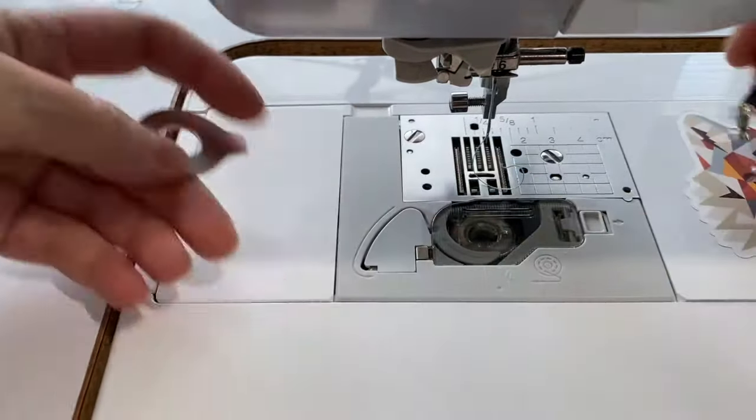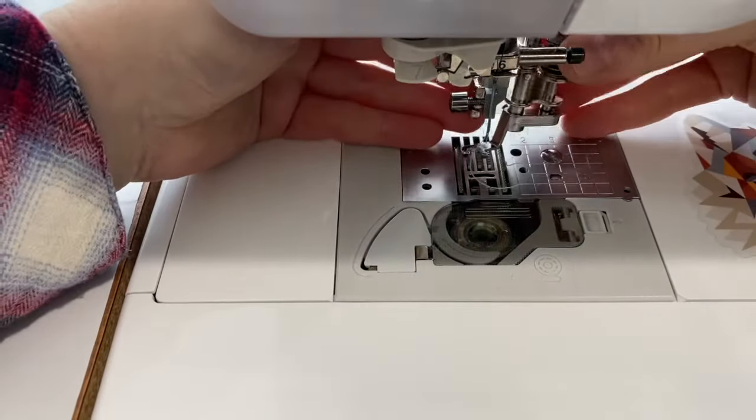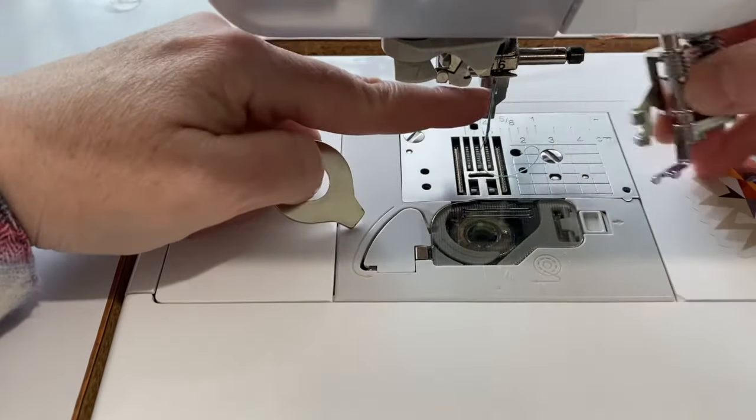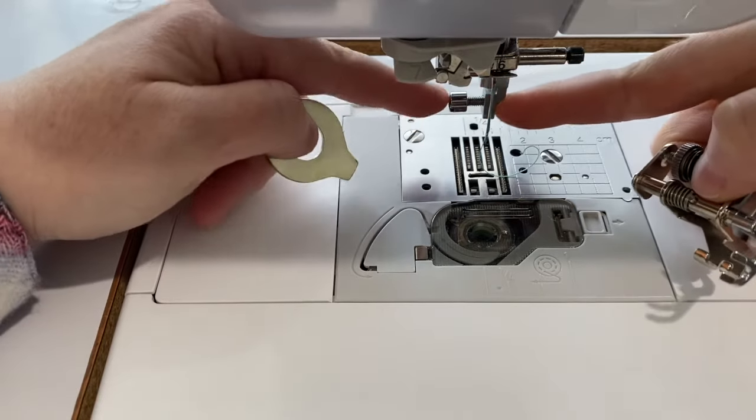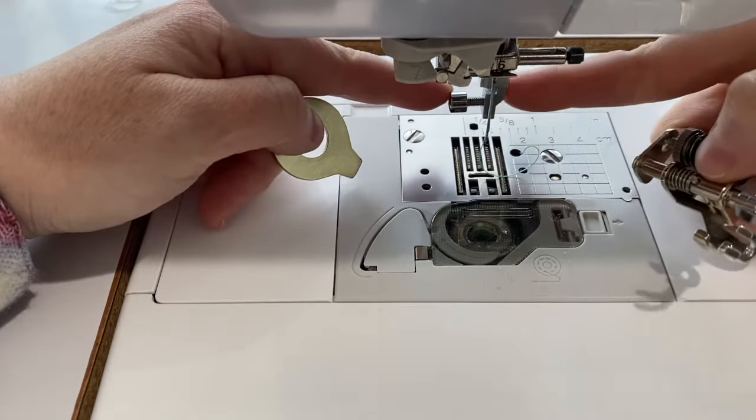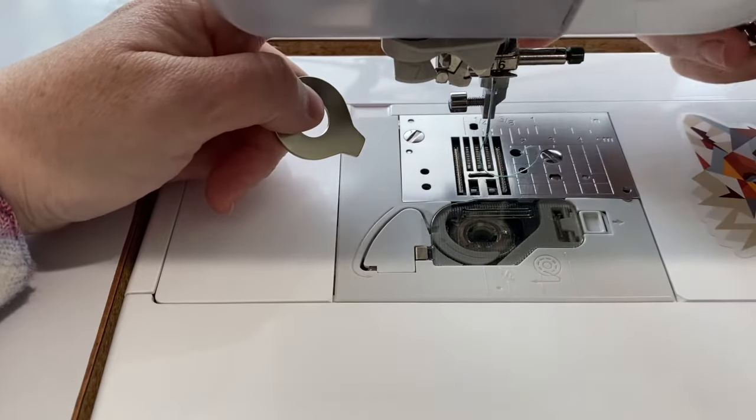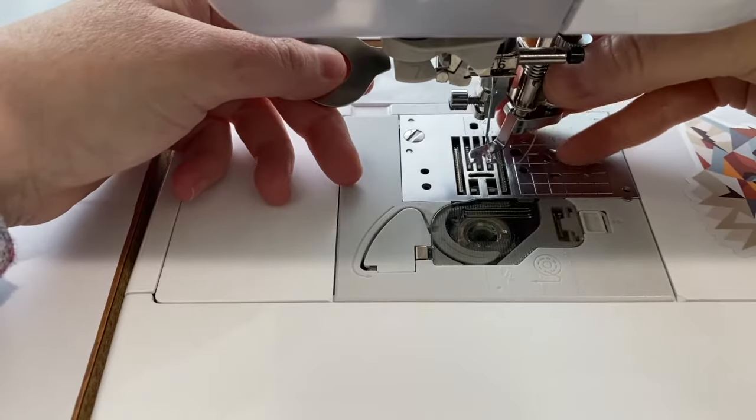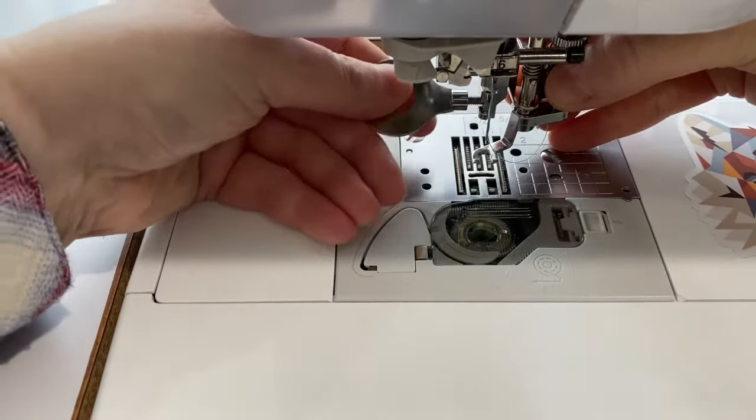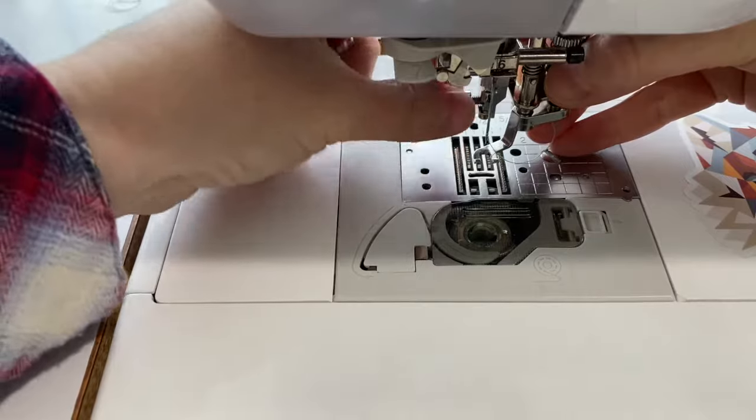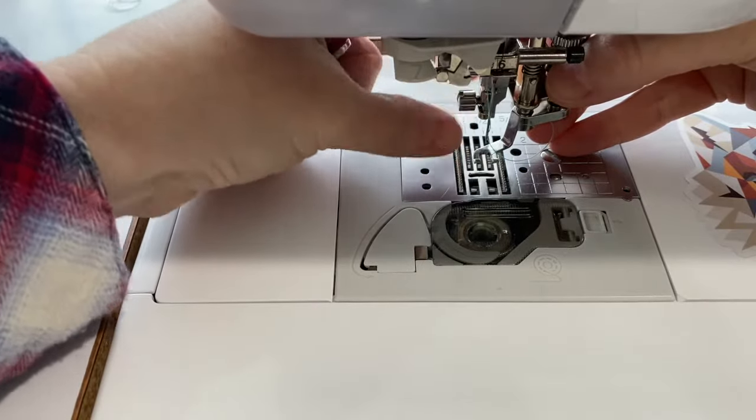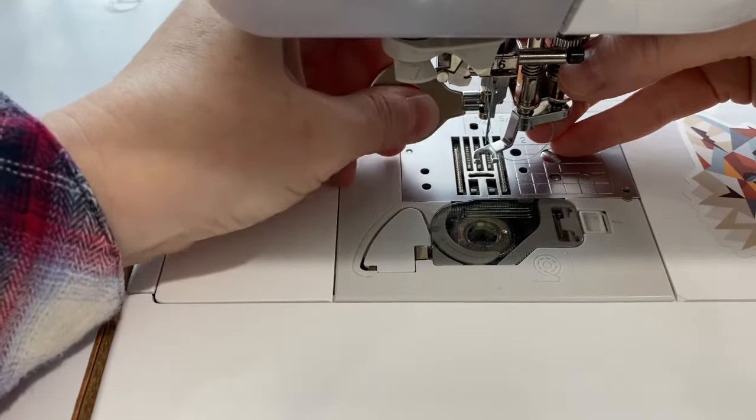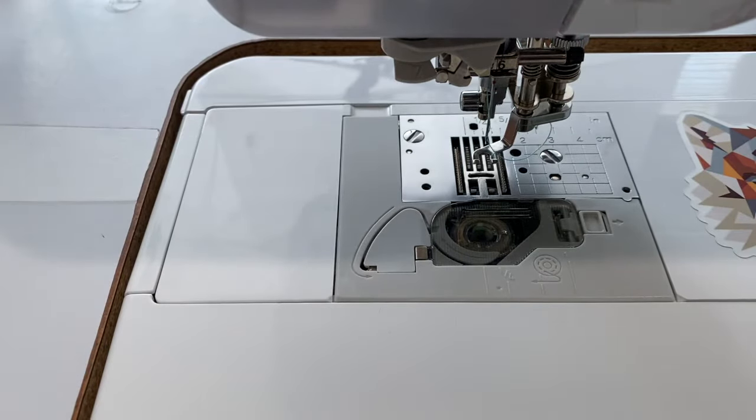All right, let's install our darning foot on our machine. So I actually have a high shank machine that has a little low shank adapter that turns the high shank into a low shank. So I'm just going to install this onto the adapter and then turn the machine on.